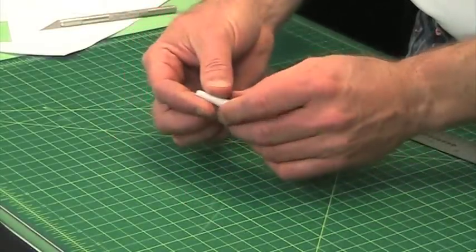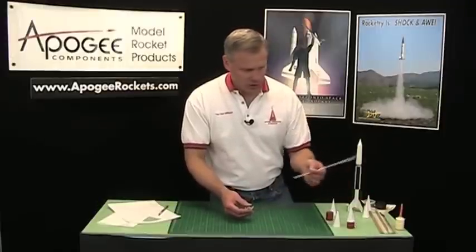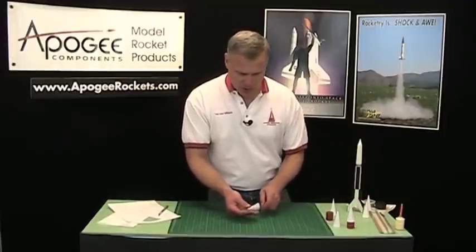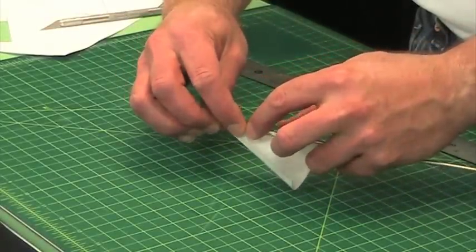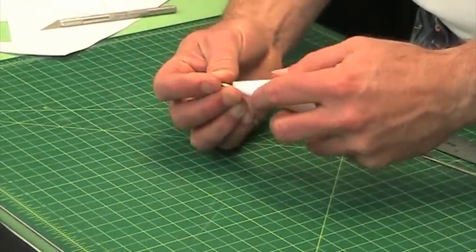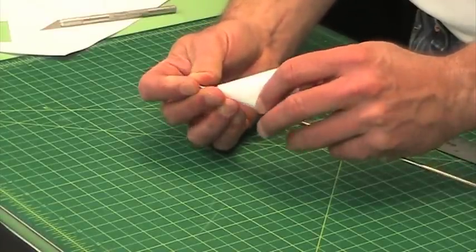Now if you're having troubles with that tip, you can take a dowel. I just have here a part of a launch rod, and I can roll that tip around that edge. I'm pushing down on it as I'm rolling.